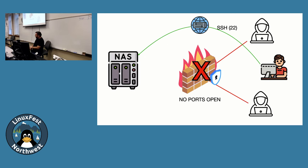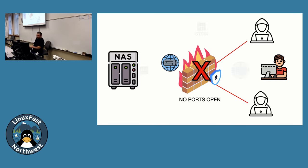A traditional VPN uses a hub-and-spokes model — you connect to a hosted VPN server somewhere you trust, like NordVPN or Surfshark, and they give you an anonymous IP. Or it might be an OpenVPN server on a VPS that has permission to tunnel back into your personal network — again using port forwarding, with all the risks we discussed. With Tailscale, we don't do that.